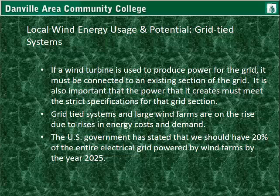Local wind energy usage dealing with grid-tied systems. If a wind turbine is used to produce power for the grid, it must be connected to an existing section of the grid. The power it creates needs to meet strict specifications for that grid section — it can't have too much noise, and it needs to match the frequency of the grid, so it has to be well-conditioned. We'll get into the specifics of what that means later on.